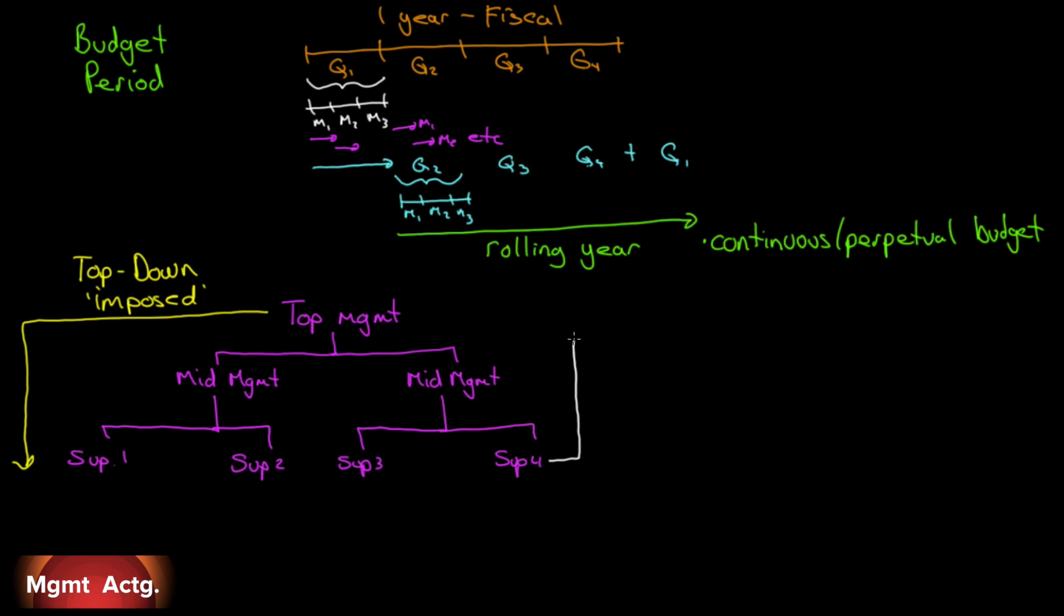Another way to do it is from the bottom up. We start at the lower levels, and we continually move the budgets higher and higher through the organization. This is called participative budgeting. Everybody gets a say in what the budget should be. It tends to be more accurate because people at the bottom line or the front lines have a better idea of what's possible.